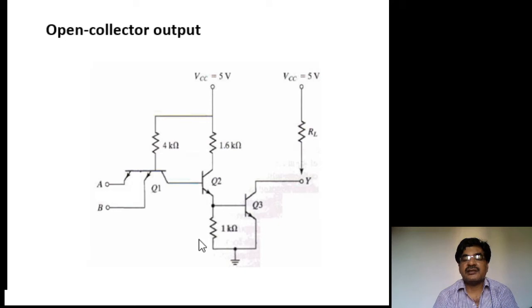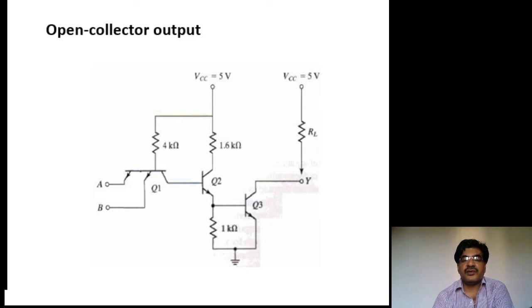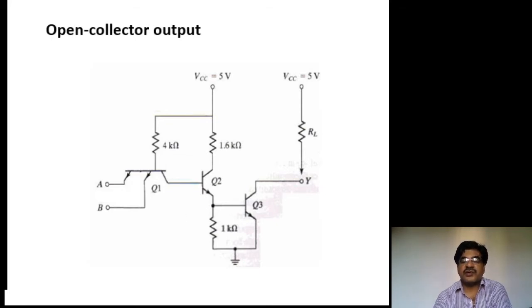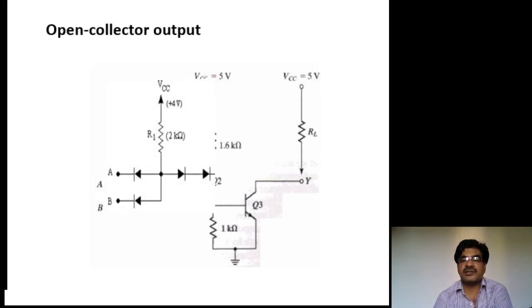The open collector output configuration is just a modified form of DTL — diode-transistor logic. In DTL you have four diodes: two are the input diodes at inputs A and B, and two diodes between the input diodes and the final transistor. All those diodes are replaced by transistors Q1 and Q2. Q1 replaces the input diodes A and B and diode D1.